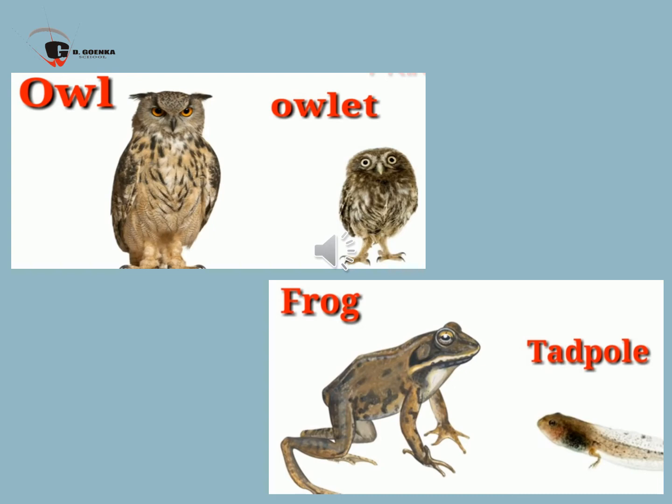Many baby birds are called chicks, but baby owls have their own special name — that is owlet. Our next animal is frog — Tadpole. The frog will lay thousands of eggs at one time. Tadpoles have a tough life because they have to escape from many creatures that hunt them in the pond.